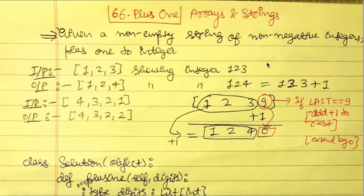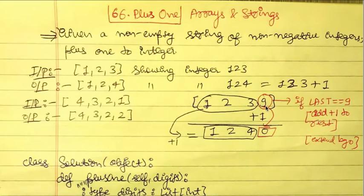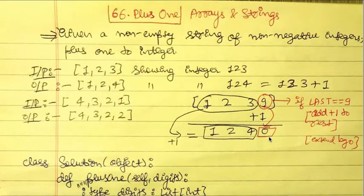For example, consider [1, 2, 3, 9] representing 1239. The last element is nine, so we take the remaining elements [1, 2, 3] and add one to get [1, 2, 4], then extend the array by appending a zero. So [1, 2, 3, 9] becomes [1, 2, 4, 0], which corresponds to 1239 plus one equals 1240.